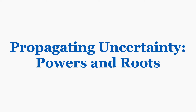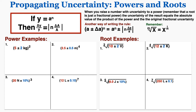In this video I'm going to show you how to propagate uncertainty with powers and roots. This is the rule that we use: when you raise a number with uncertainty to a power — and remember that a root is just a fractional power — the uncertainty of the result equals the absolute value of the product of the power and the original fractional uncertainty. That was a lot of words, but once you actually apply the rule it's pretty simple. I'll start with power examples and then go to root examples.